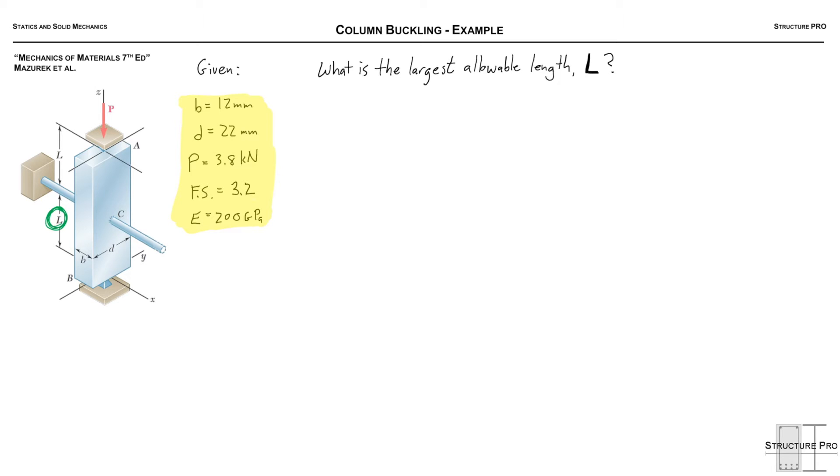We're given this column ABC and we can see that it's braced in some ways at C. We're given the small b and small d is 12 by 22 millimeters. The load is 3.8 kilonewtons and we want a factor of safety of 3.2. And finally we know E for steel given there.